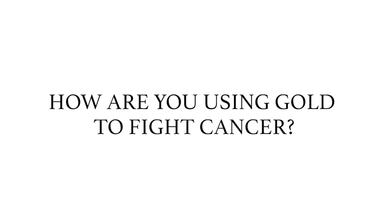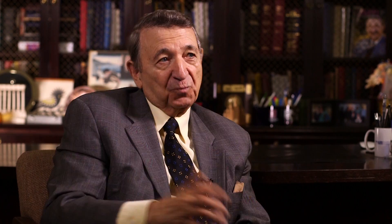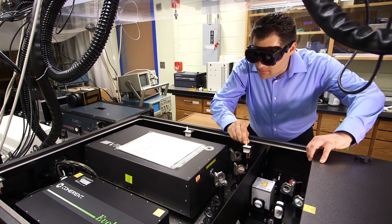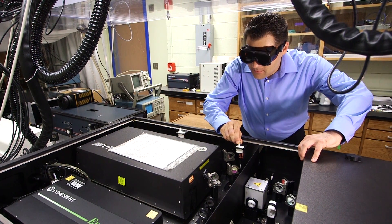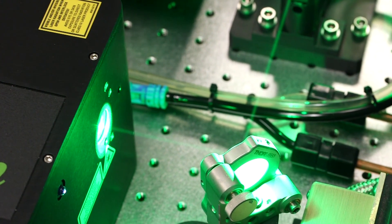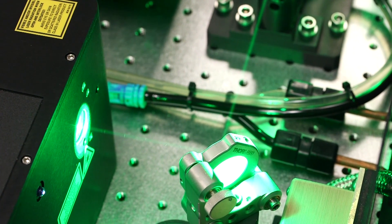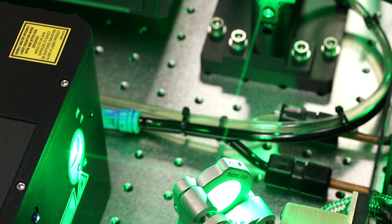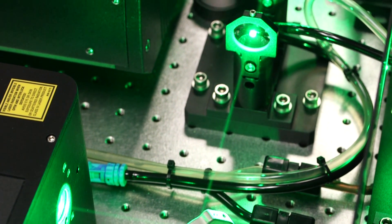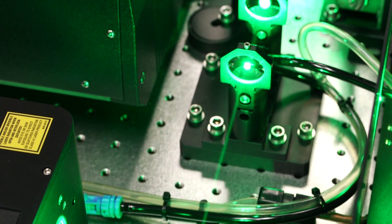Gold generally scatters light — that's why people like to have it, light scatters from it. But when you take a piece and cut it into many, many small little pieces, the scattering of the light is 100 times stronger. And if it is small enough in size, it takes that light, absorbs it, and converts it into heat — making it extremely hot.